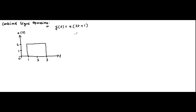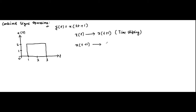The combined signal operation involves first subjecting the original signal x(t) to time shifting to obtain the time-shifted signal x(t+1) — this is time shifting. Then this time-shifted signal has to be subjected to time scaling to get x(2t+1). So first time shifting, then time scaling.